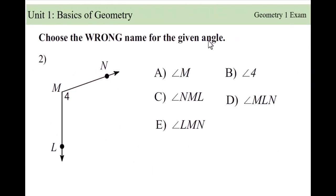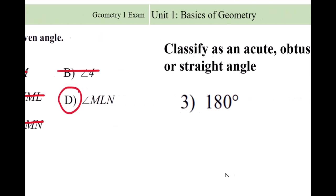This is a knowledge question — a notation question. We're looking for the wrong name for the given angle. You can call this angle M if there's no confusion; you can use just the vertex. The number 4 here is another way of notating angle NML. The notation for an angle requires the vertex in the middle, so any choice with N and L but M in between is okay. The correct wrong answer is D.